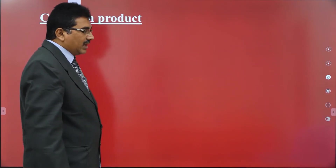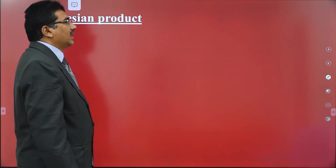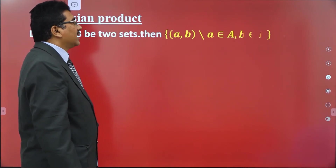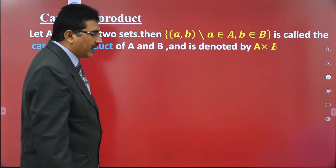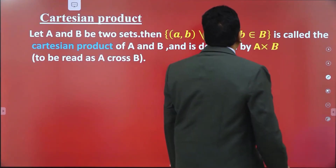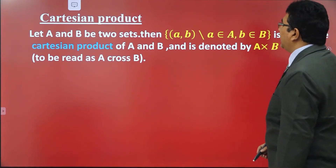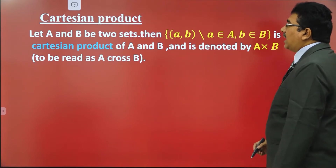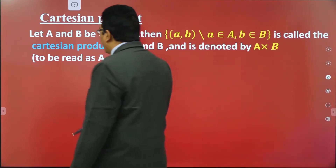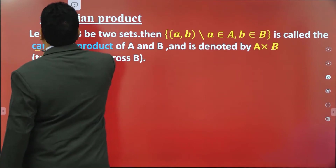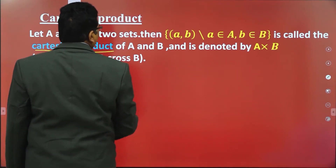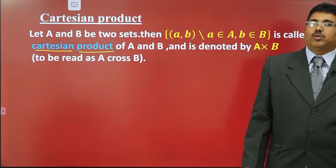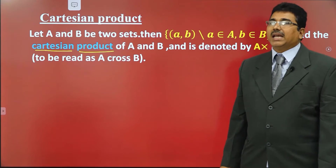Cartesian product: Let capital A and capital B be two sets. The set containing all ordered pairs (a, b) such that small a belongs to capital A and small b belongs to capital B is called the Cartesian product of A and B, and is denoted by A × B, read as A cross B.